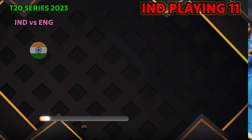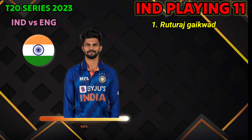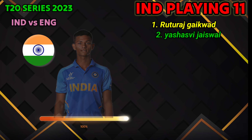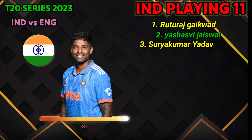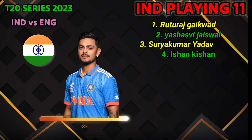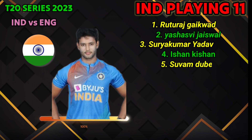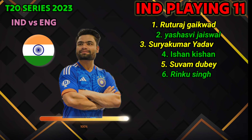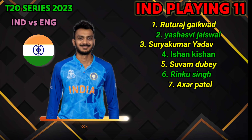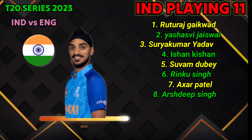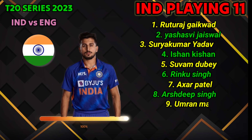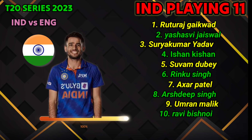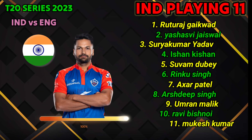Indian team playing 11: 1. Ruturaj Gaikwad, 2. Yashasvi Jaiswal, 3. Suryakumar Yadav, 4. Tilak Varma, 5. Deepak Hooda — left-handed batsman, 6. Shivam Dube — left-handed batsman, 7. Rinku Singh — left-handed batsman, 8. Axar Patel — left-handed batsman, 9. Arshdeep Singh — fast bowler, 10. Umran Malik — fast bowler, 11. Mukesh Kumar — fast bowler.